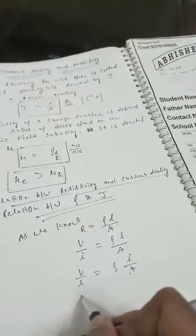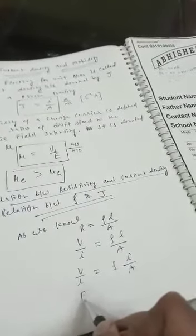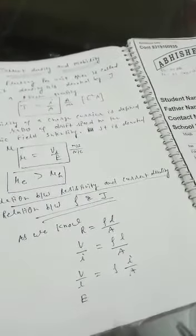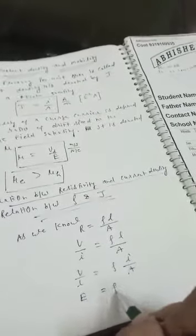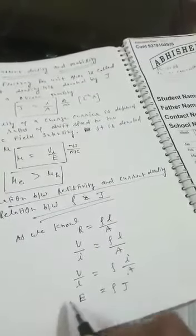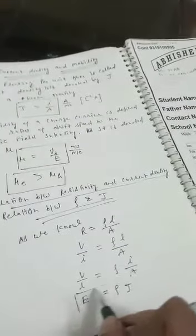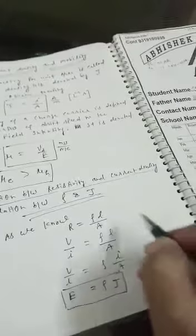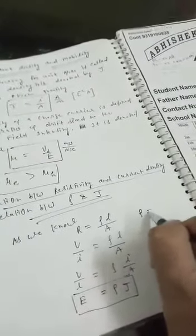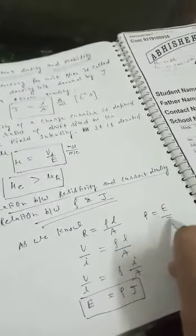V/l is equal to electric field E, and I/A equals j. So E = ρj, or we can write ρ = E/j.